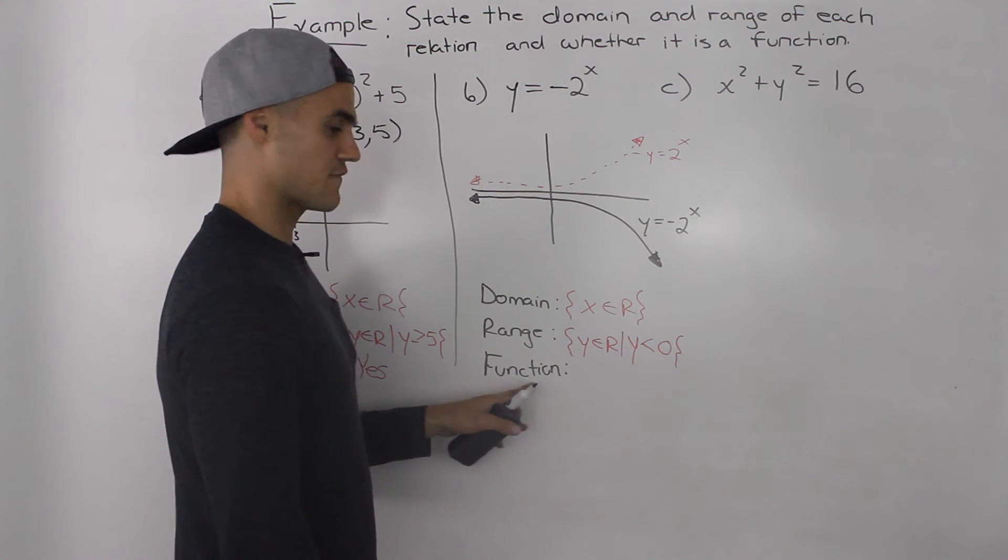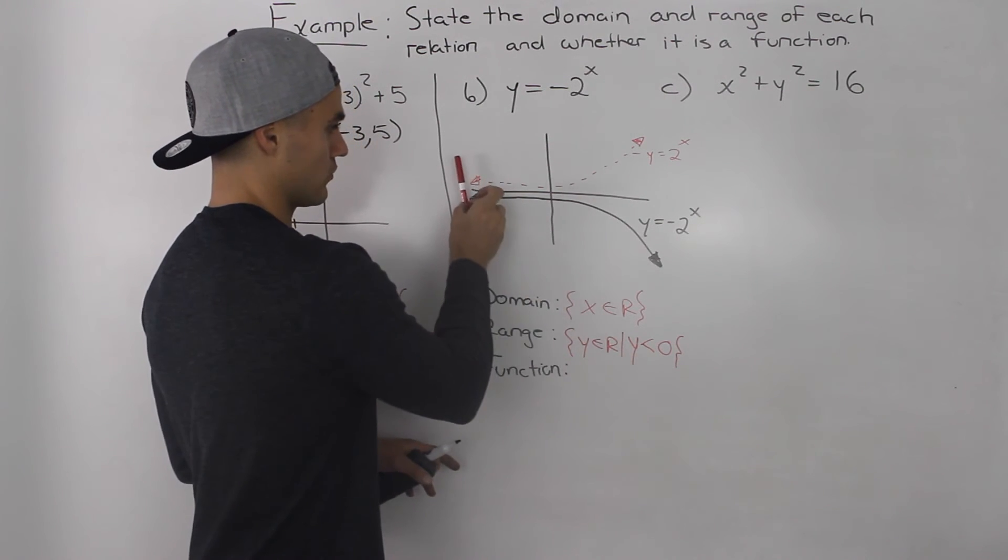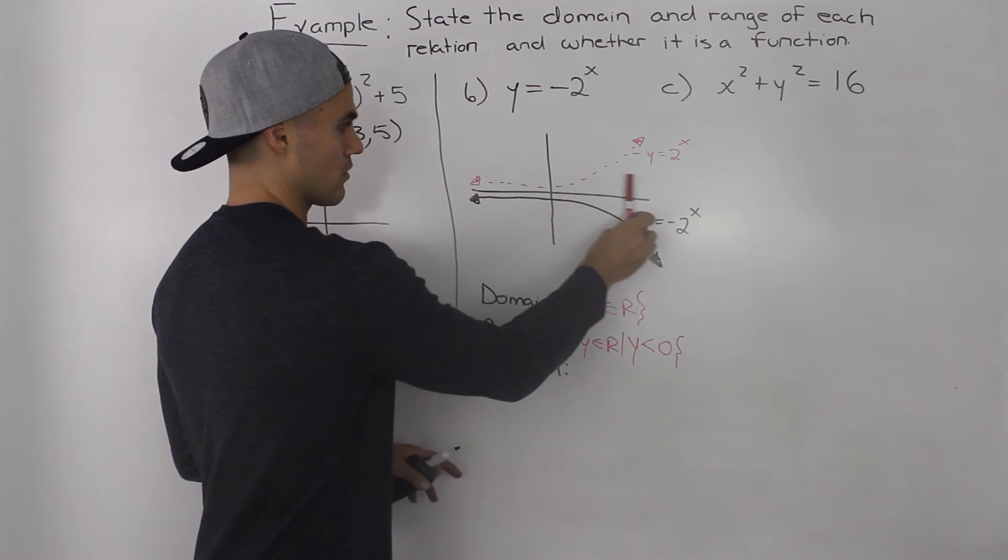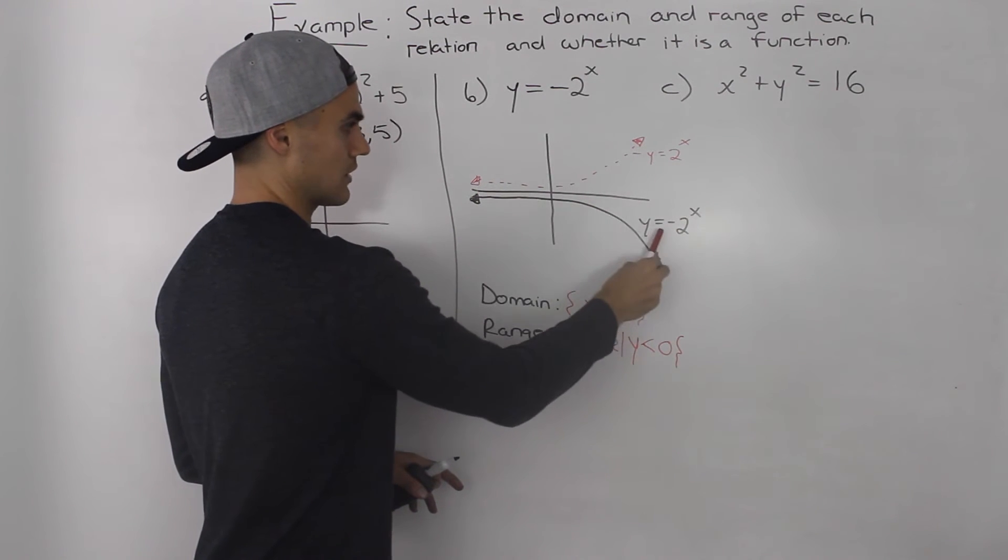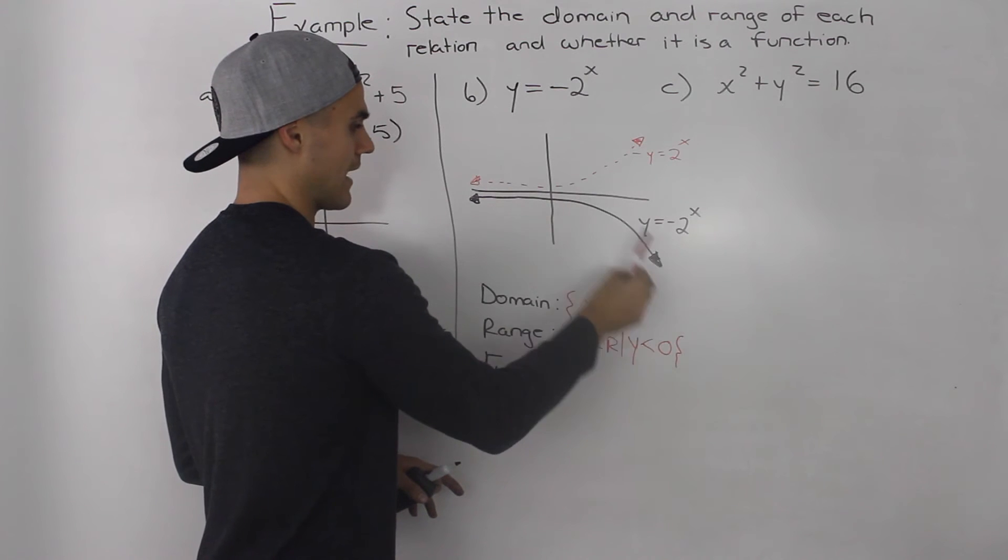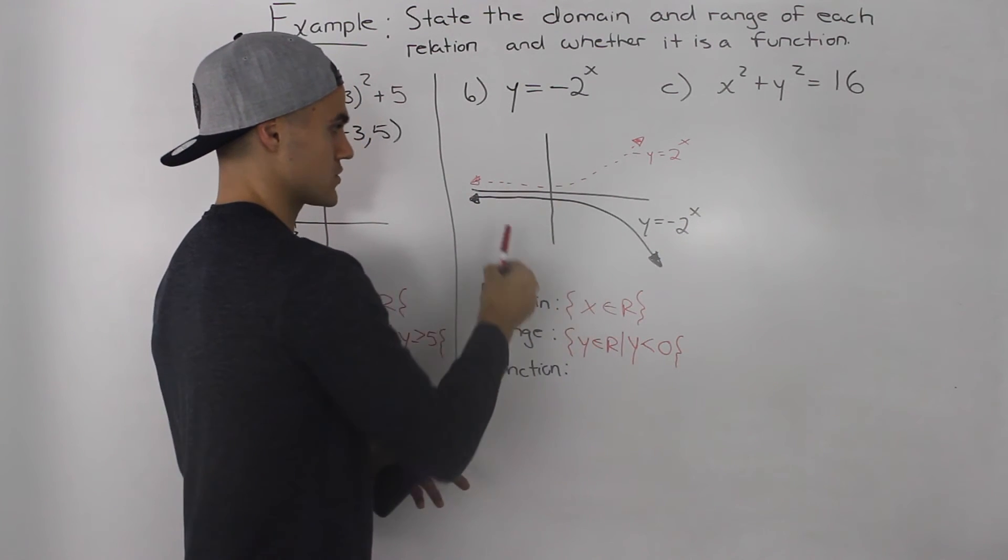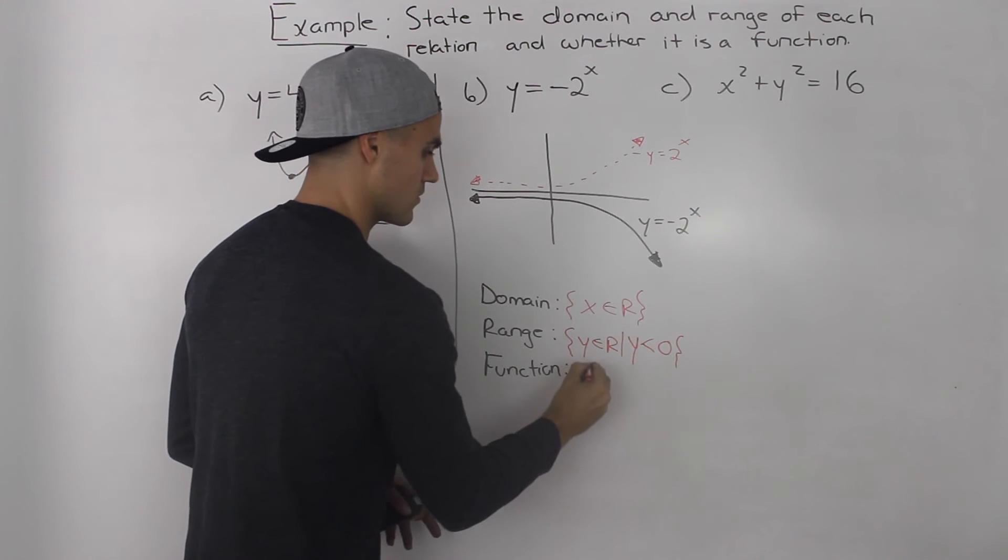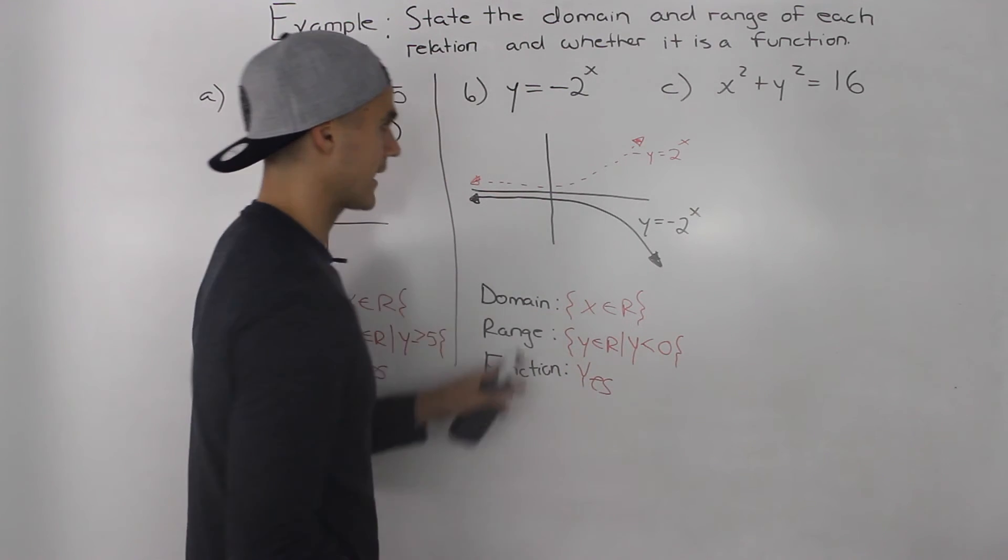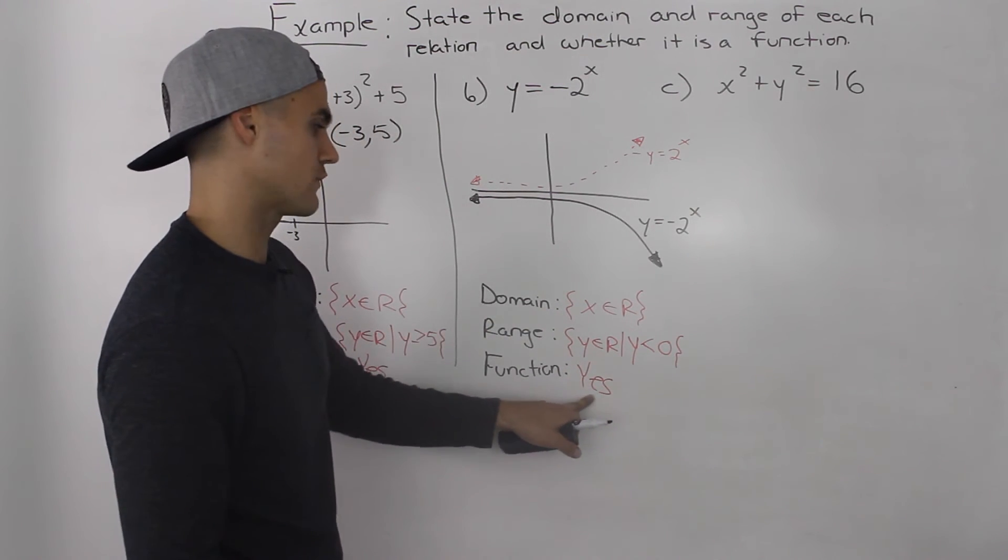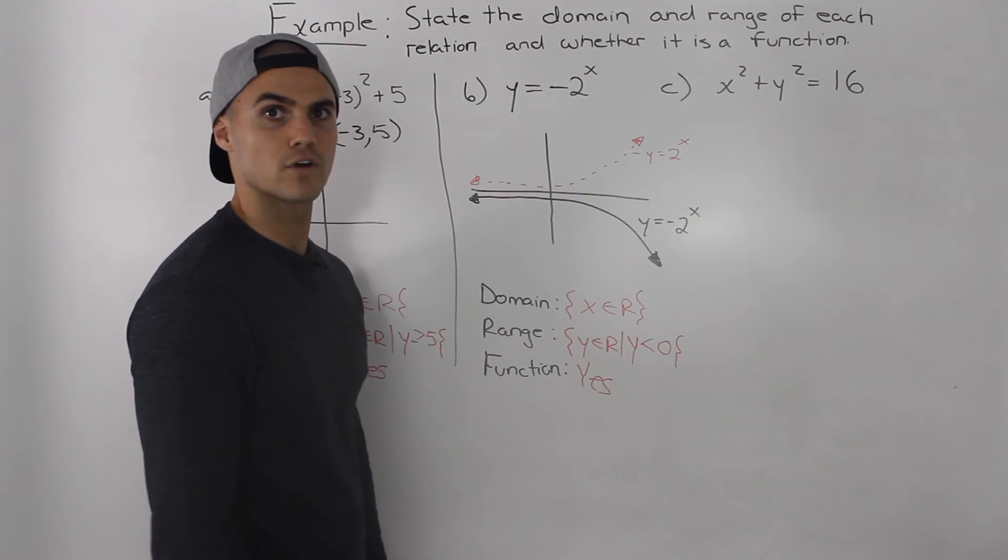Now, is this a function or not? Well, if we run a vertical line through this function here, this negative 2 to the power of x in black, then notice how there are no points where it's touching twice. So it is a function. An exponential function is always a function. It's always going to pass the vertical line test.